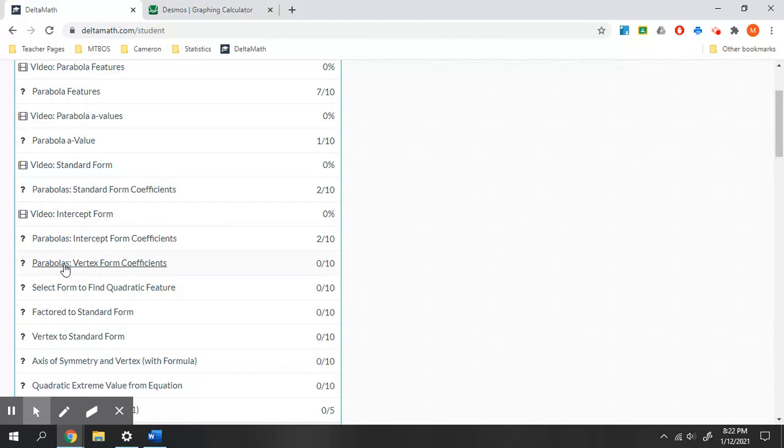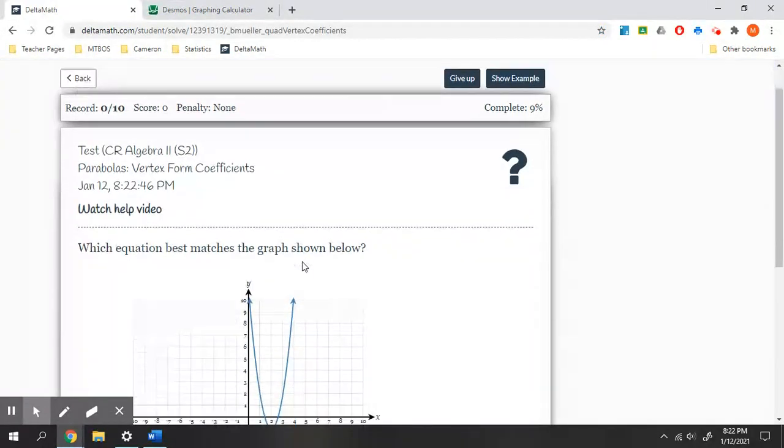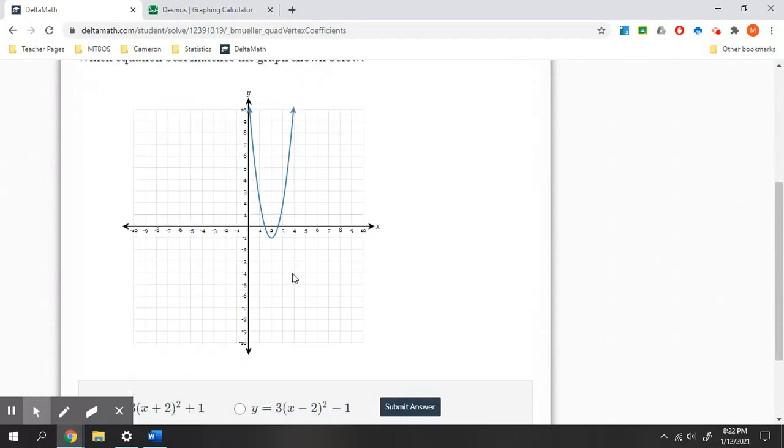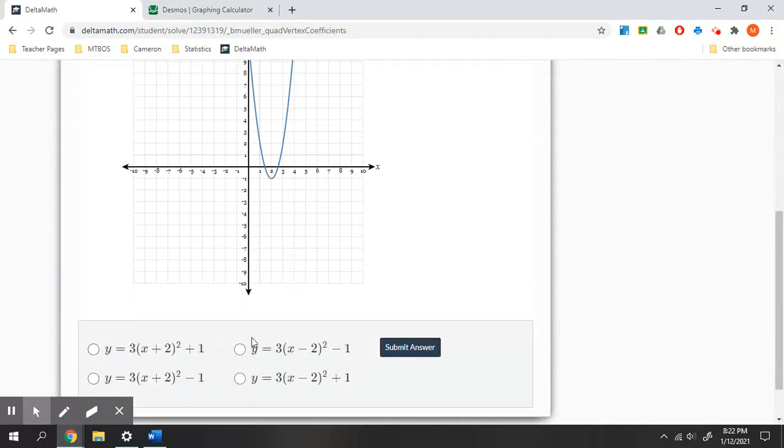Let's look at this one. We have vertex form coefficients. Here are our options and our graph. Looking at this, our vertex is (2, -1). So I need the one that's facing up, but if you notice, all these a values are the same.